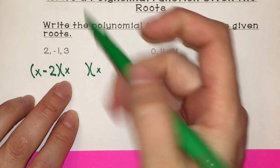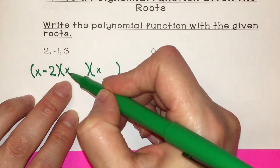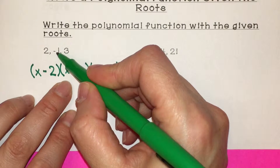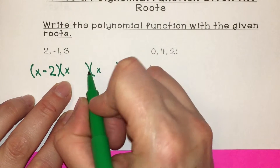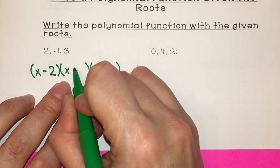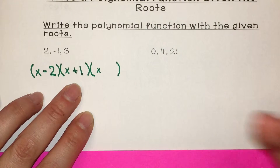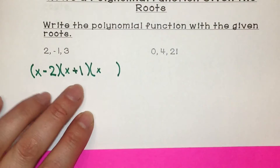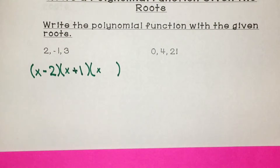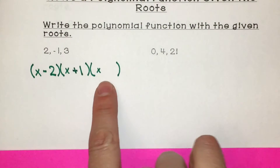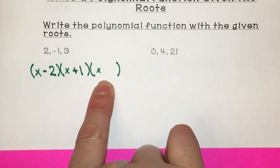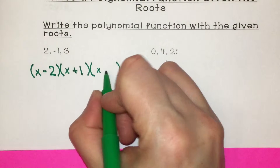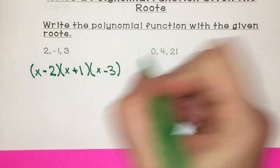Whenever you work backwards to figure out what the factor was originally, you're always going to have the opposite sign in front of it. So where x equals negative 1, it was originally x plus 1, and then you found that x equaled negative 1. For the last factor, it's x minus 3.